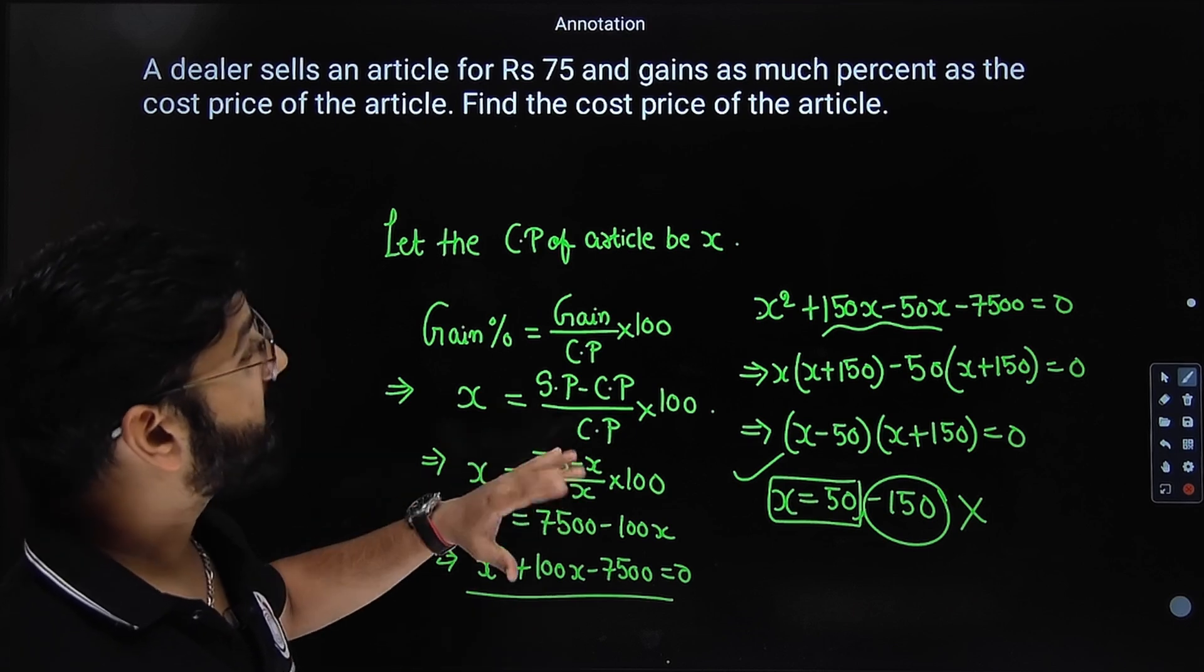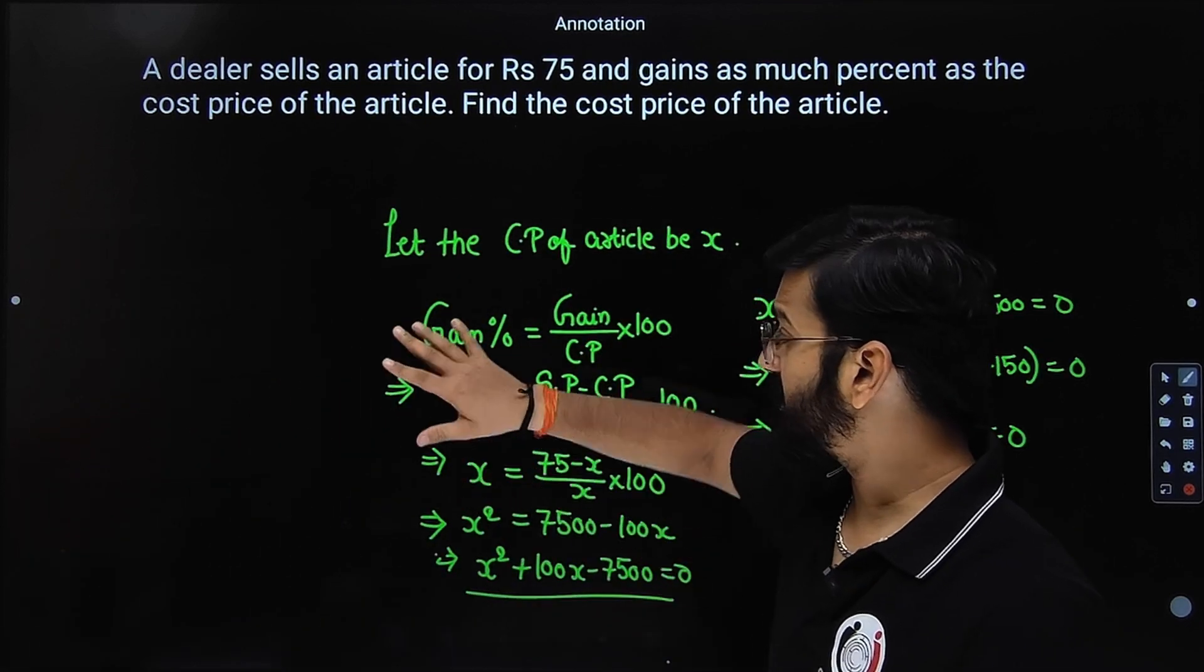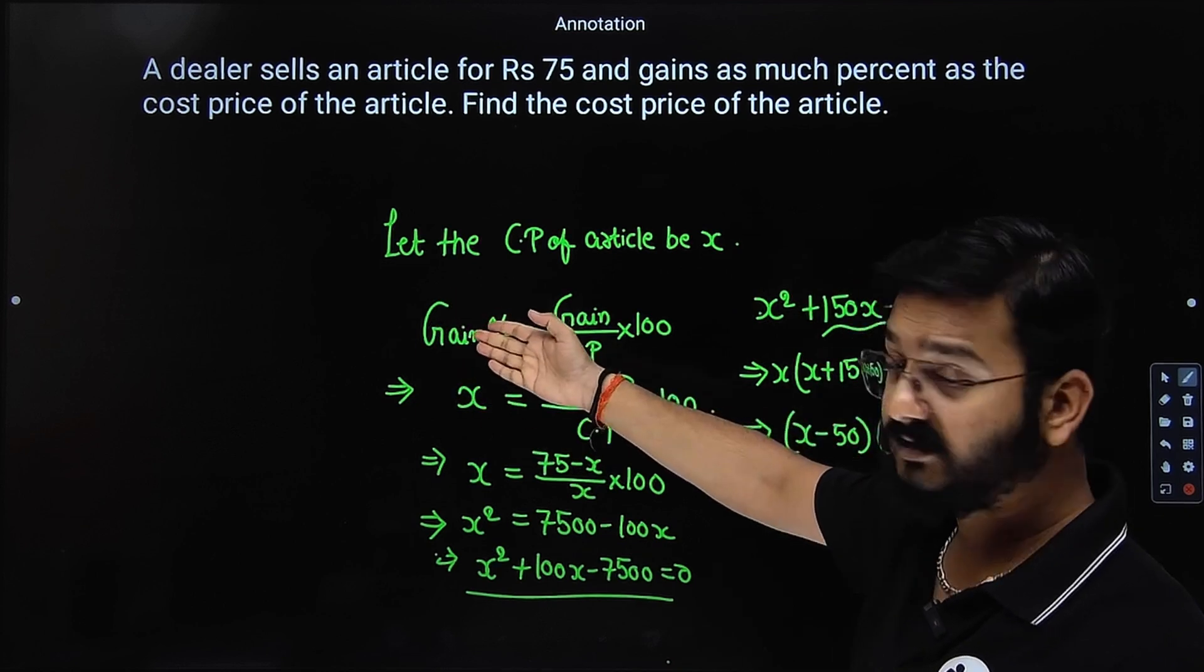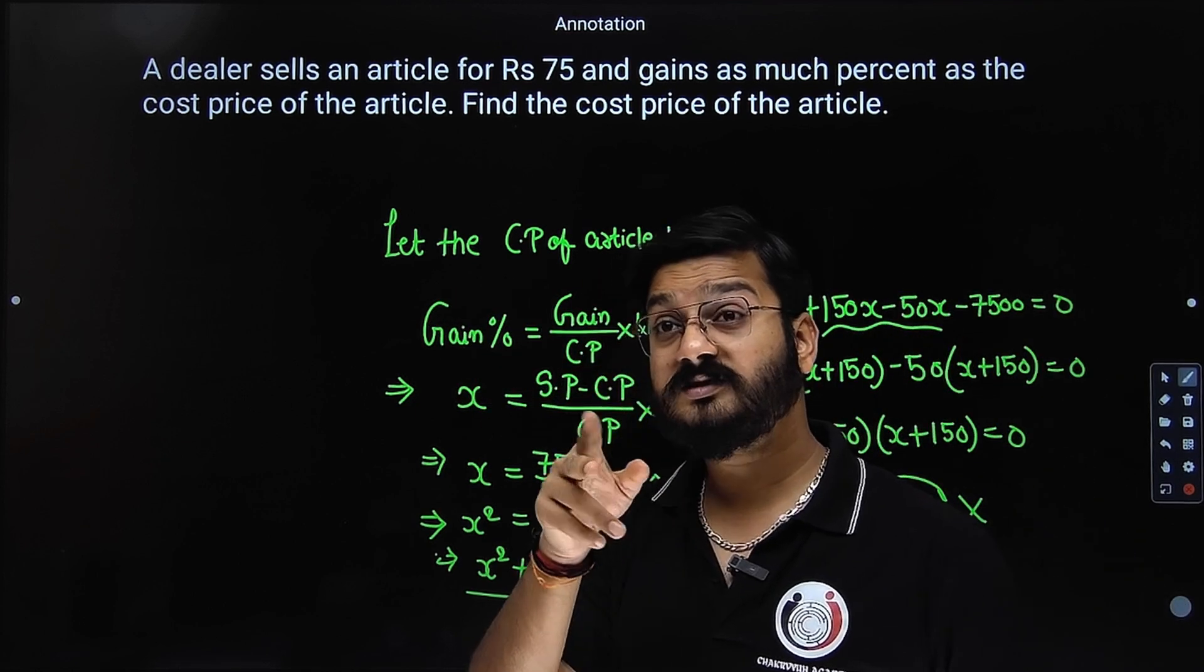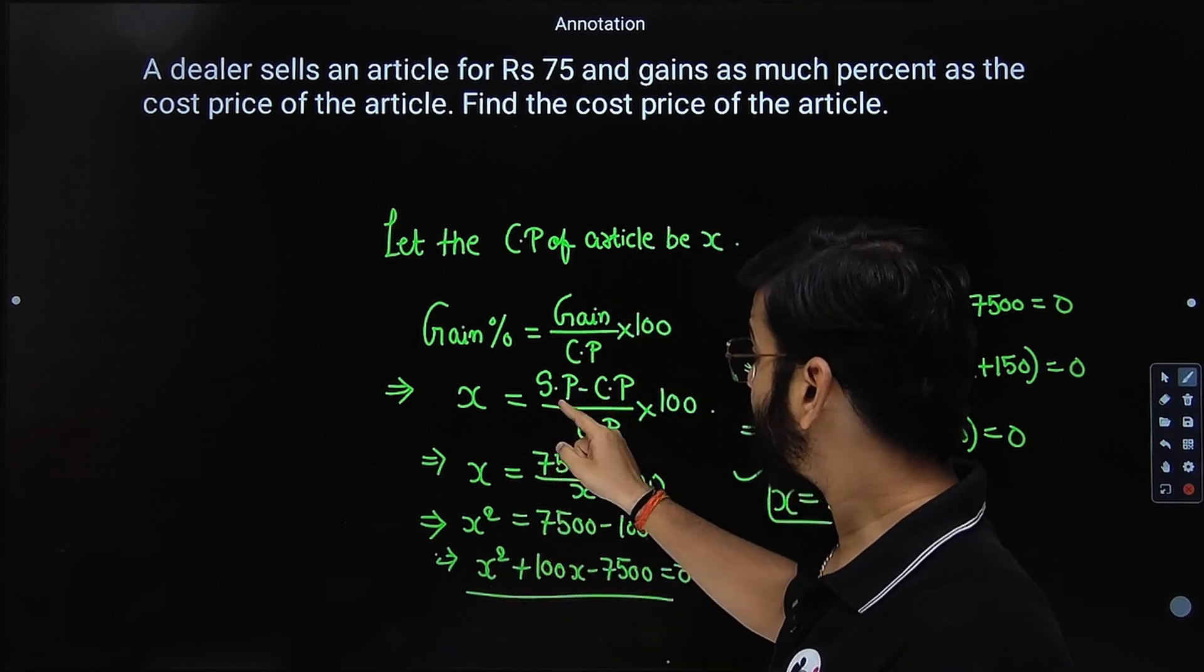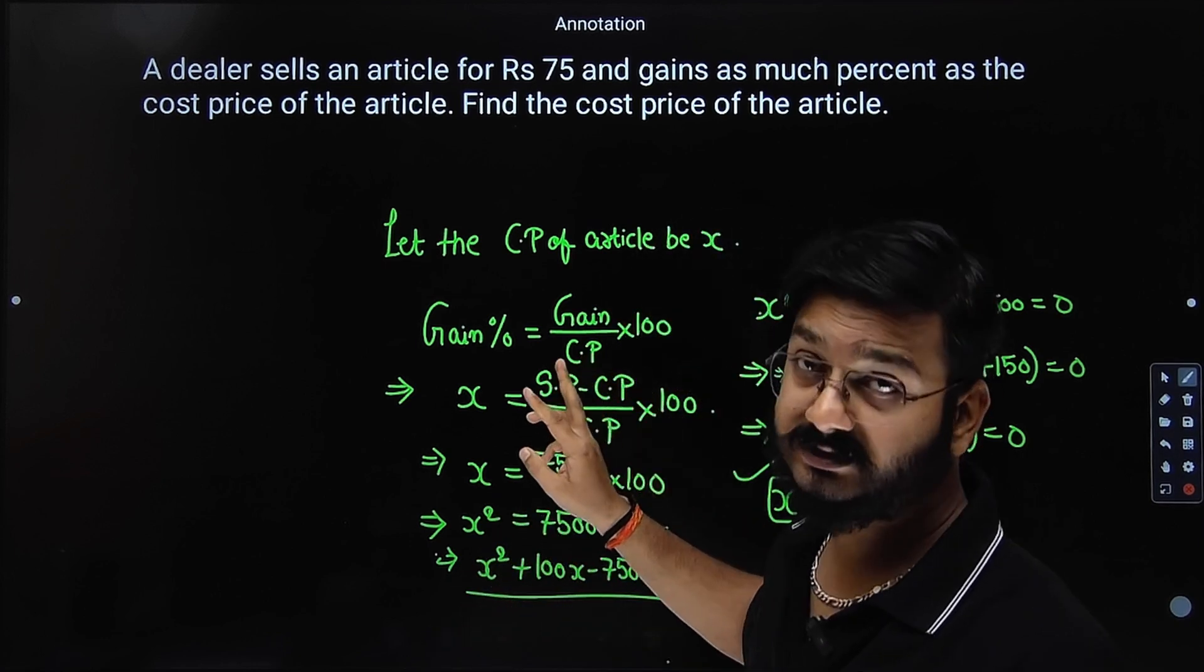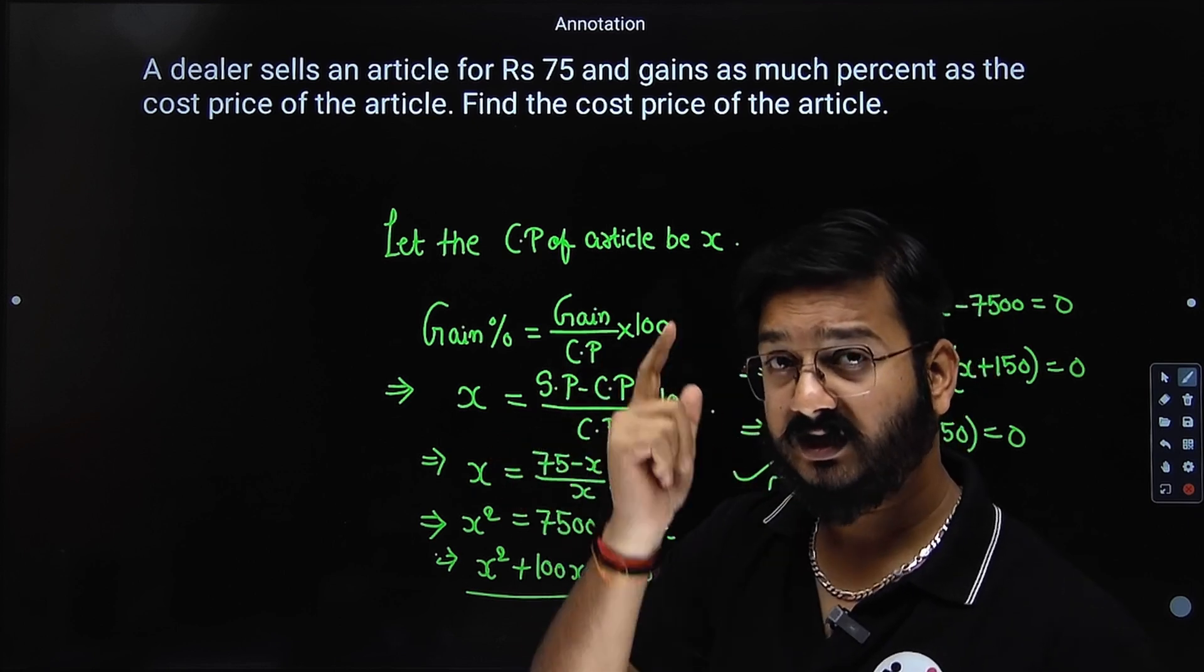Okay, so these kind of questions, similar type of question, they can ask you for loss. What will be the formula for loss? If it was loss, loss percentage will be loss by CP. If it is loss, it means cost price should be more than selling price. So if it is loss, instead of SP minus CP, it should be CP minus SP. That will be the only change. So let us take the next question.